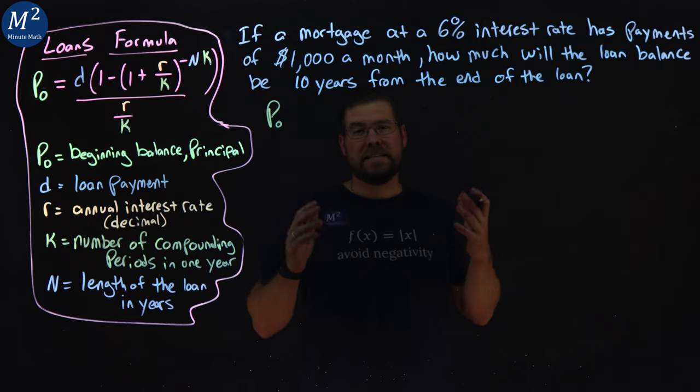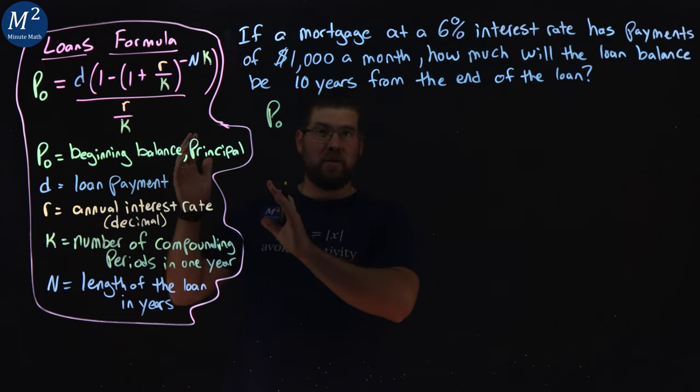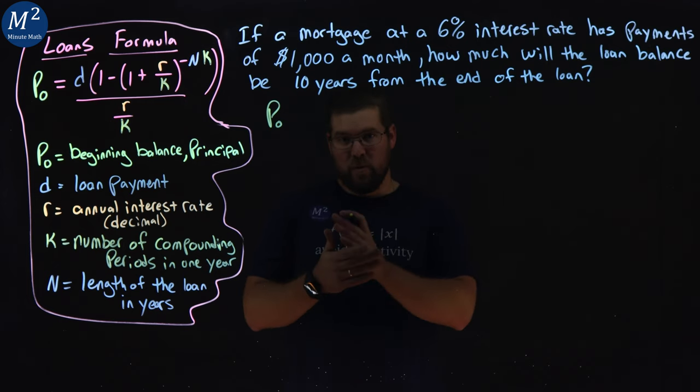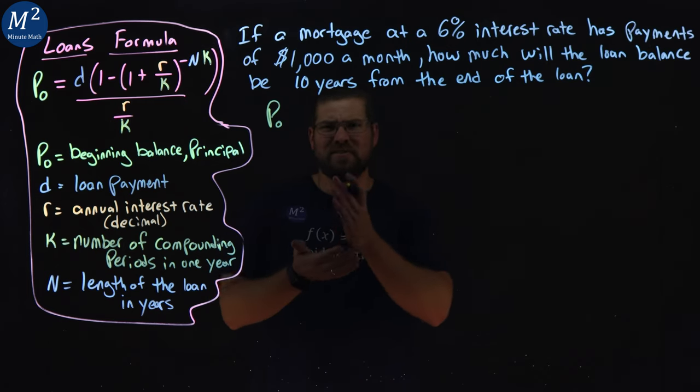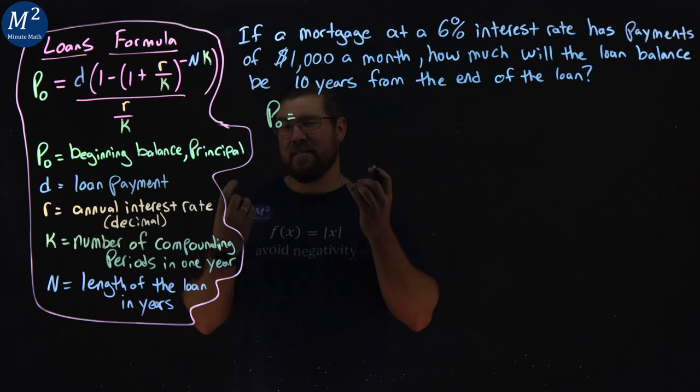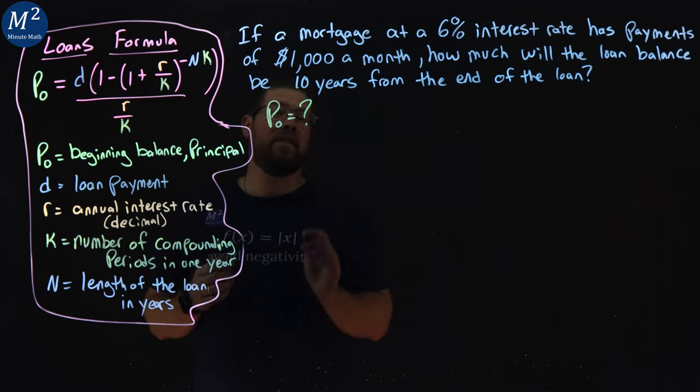Now, this loan has already existed. We don't really know how long it's been, but at the 10 years left to the end, that's what we're trying to find. So we're imagining the loan kind of starts right now, and we have 10 years left to go. So in this problem, it's treated as if it's the beginning amount, and we don't know what that is.